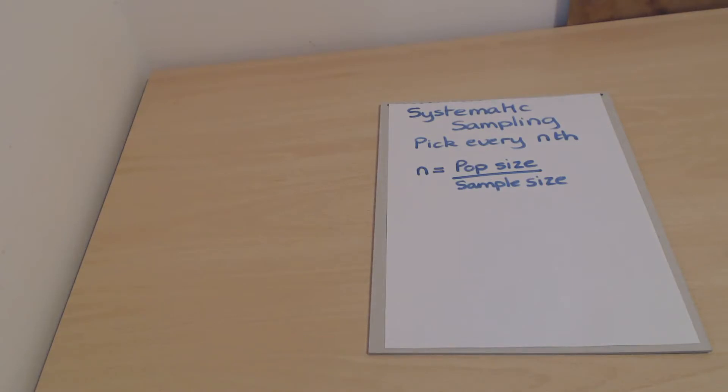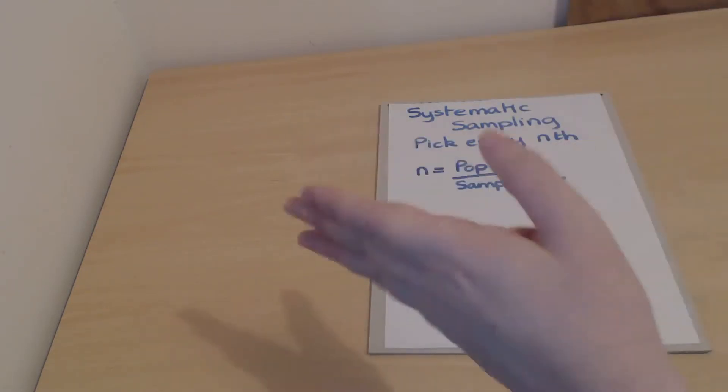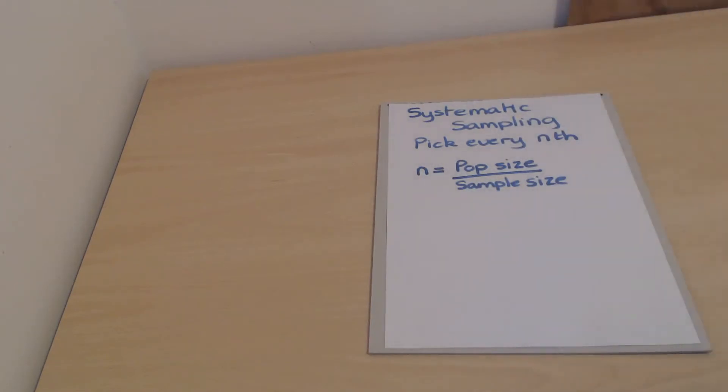tried to divide the class into three groups, labeling first, second, third, first, second, third, and then all the ones go together, all the twos go together. Similar to that, but in this case we don't want everybody in a group. You just number everybody in the classroom and then pick every, say, third person to be the sample group.